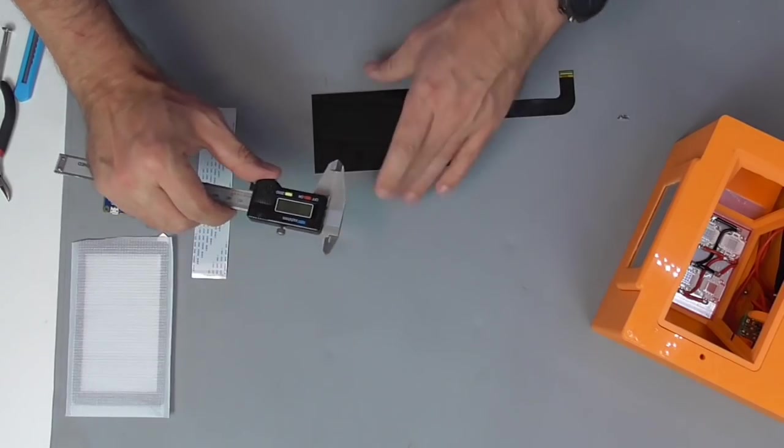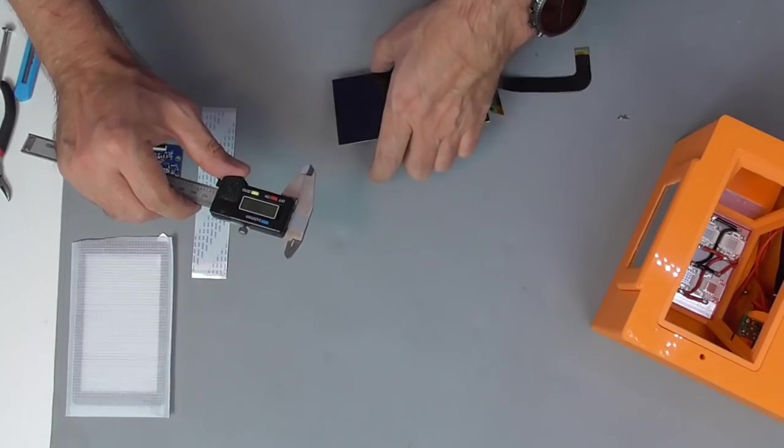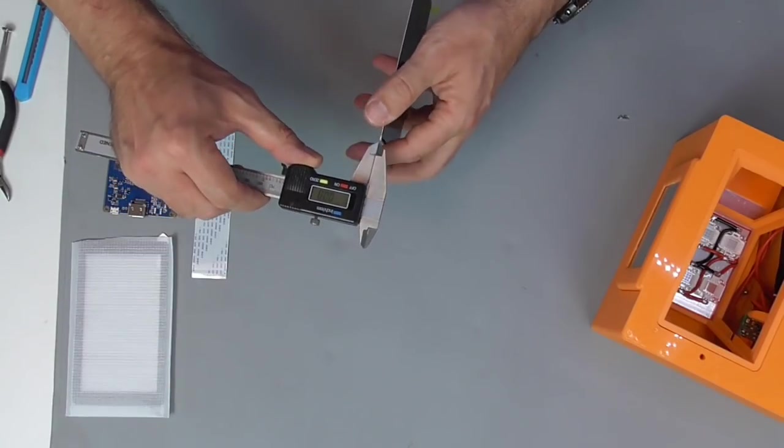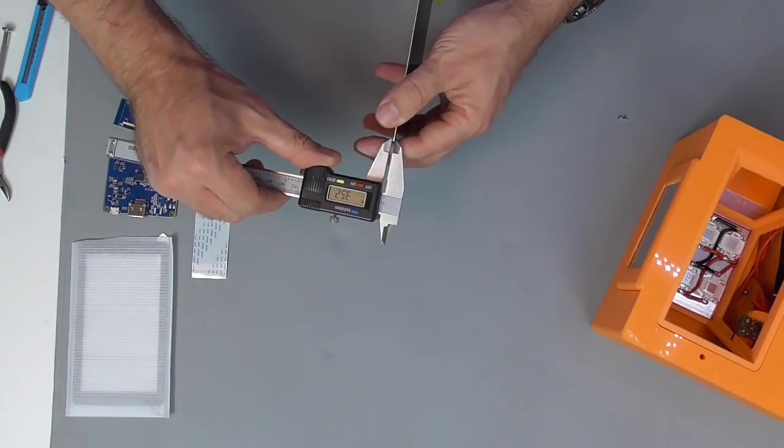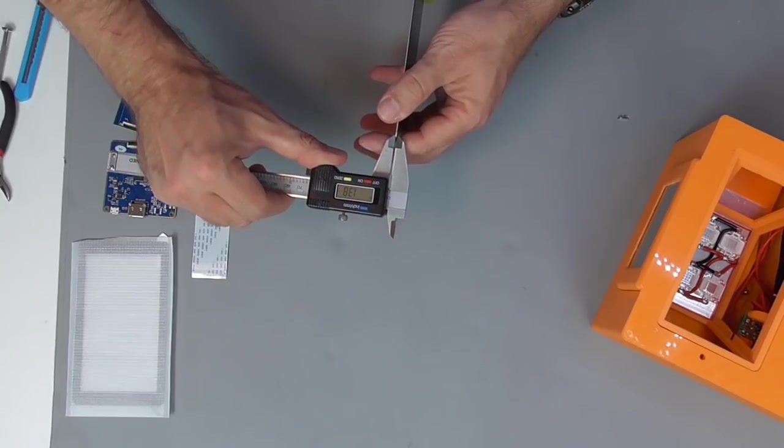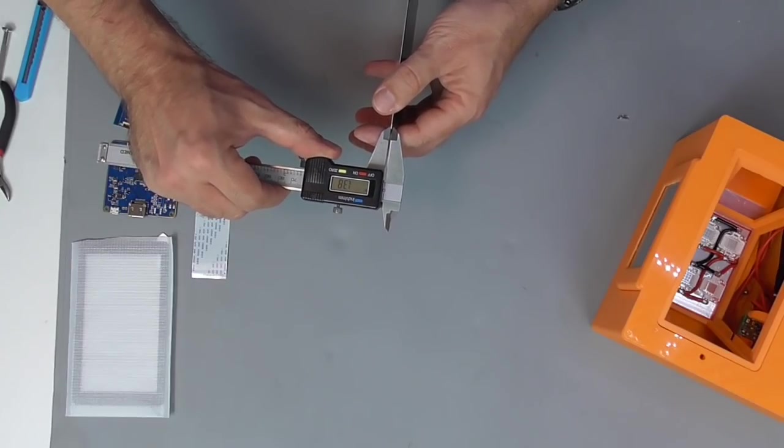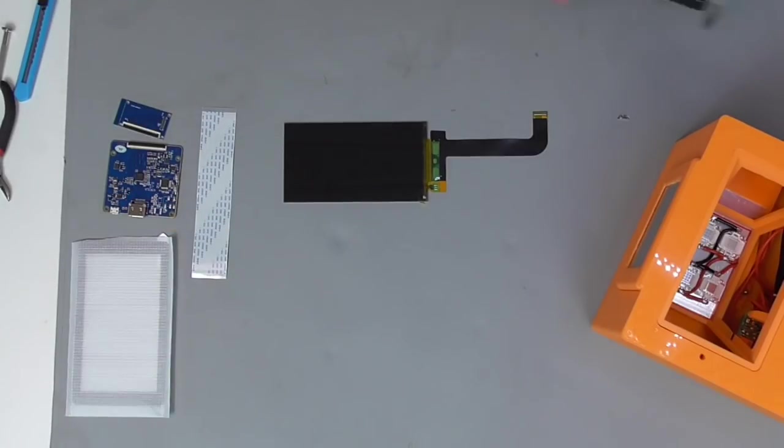Just to give you some impression how thin and fragile those displays are, we make some measurement. As we can easily see, it's about 1.4mm thick and this is while it has still its backlight on. Needless to say that without backlight, it's even thinner and even more fragile and we need to take a lot of care not to mess it up.